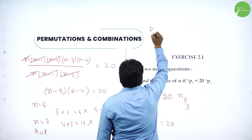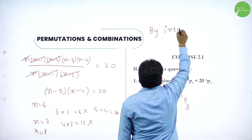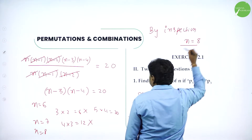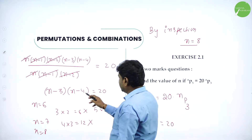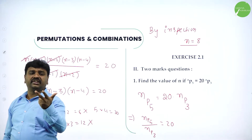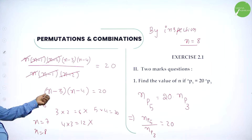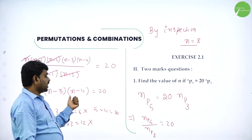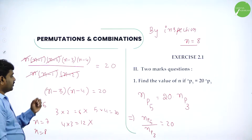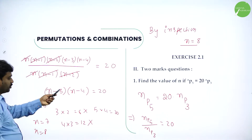So by inspection N is 8. You should start with greater than 4, because 4 minus 4 becomes 0. I tried 5, 6, 7, and 8 — and I got it. Because 8 minus 3 is 5, 8 minus 4 is 4, and 5 into 4 is 20. That's it. And the other method is: you multiply.